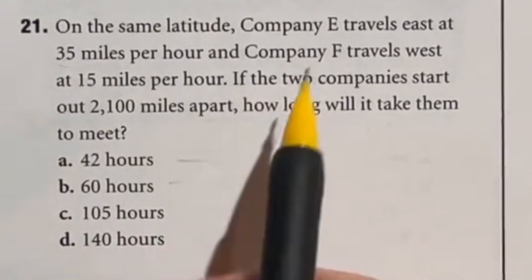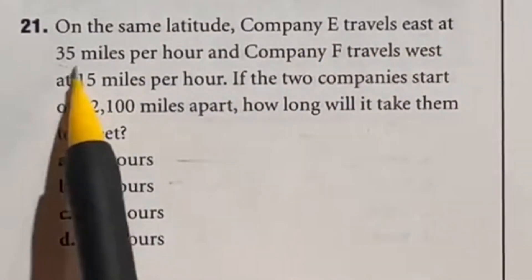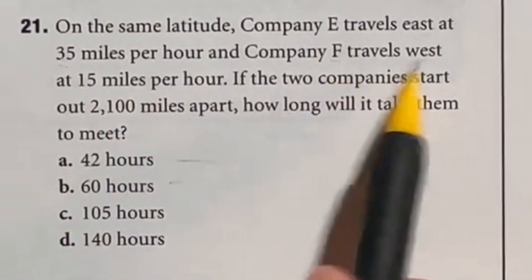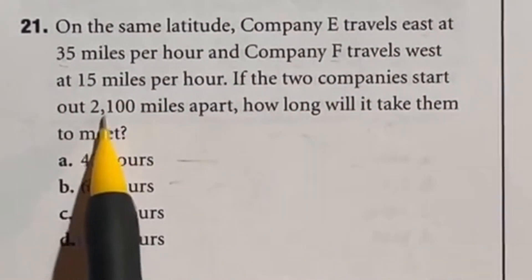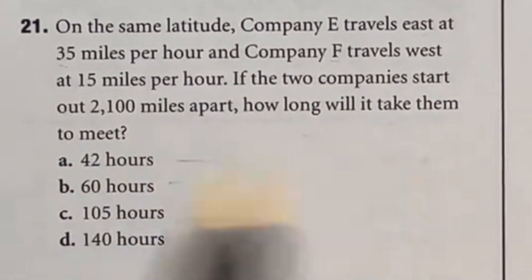Number 21 looks a lot more challenging than it actually is. Company E travels east at 35 miles per hour. Company F travels west at 15 miles per hour. The two companies start out 2100 miles apart. How long will it take them to meet?